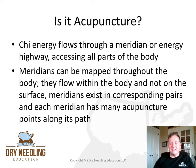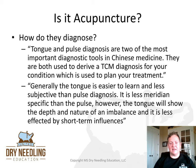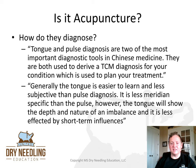How do acupuncturists diagnose? The most important tools are tongue and pulse diagnosis. Both are used to derive a traditional Chinese medicine diagnosis, which is used to plan treatment. Generally, the tongue is easier to learn and less subjective than pulse diagnosis, and less meridian-specific than the pulse. However, the tongue will show the depth and nature of an imbalance and is less affected by short-term influences.